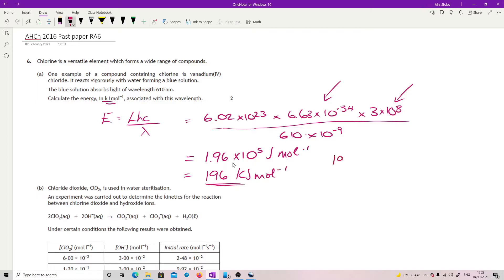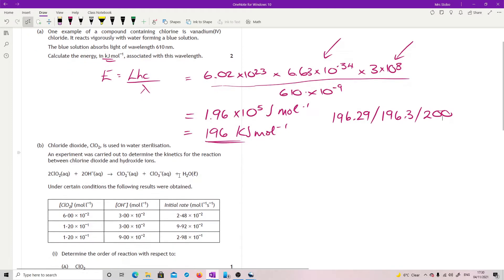The mark scheme allowed you to go 196.29 or to go 196.3 or 196 or even 200 if you went with significant figures. Right, second part.